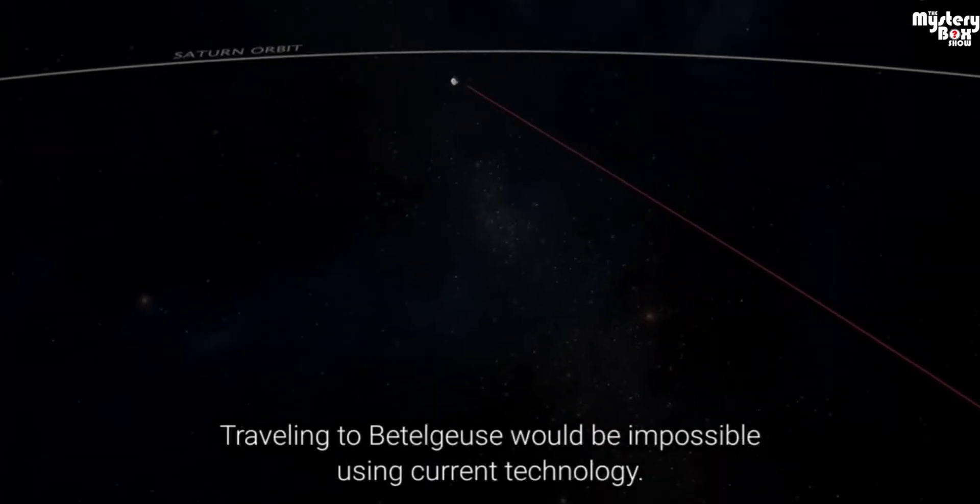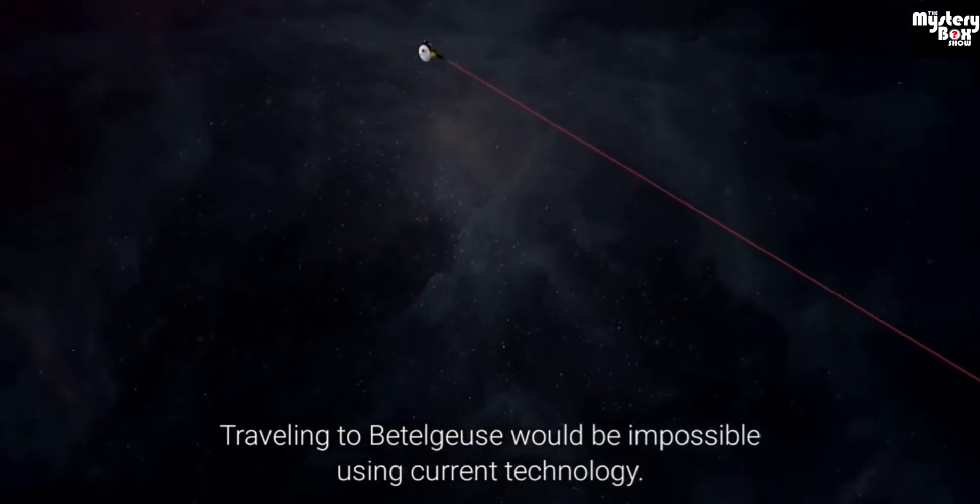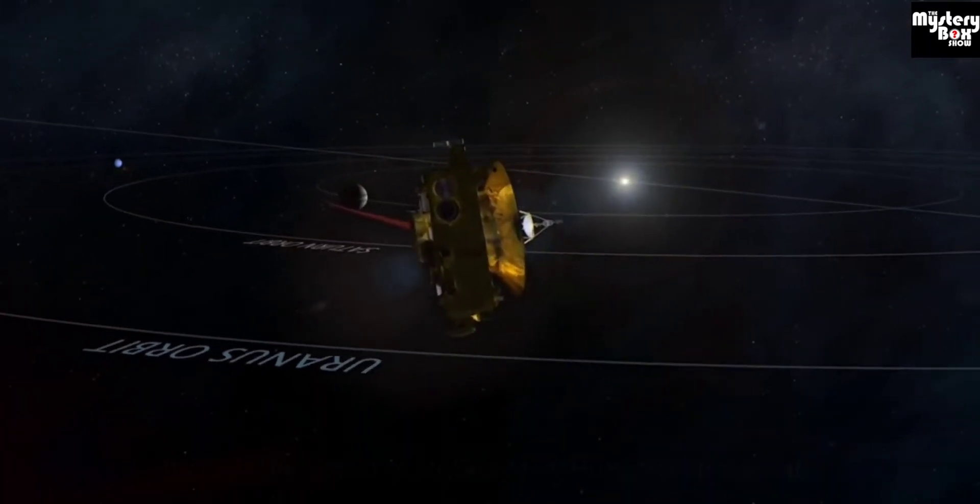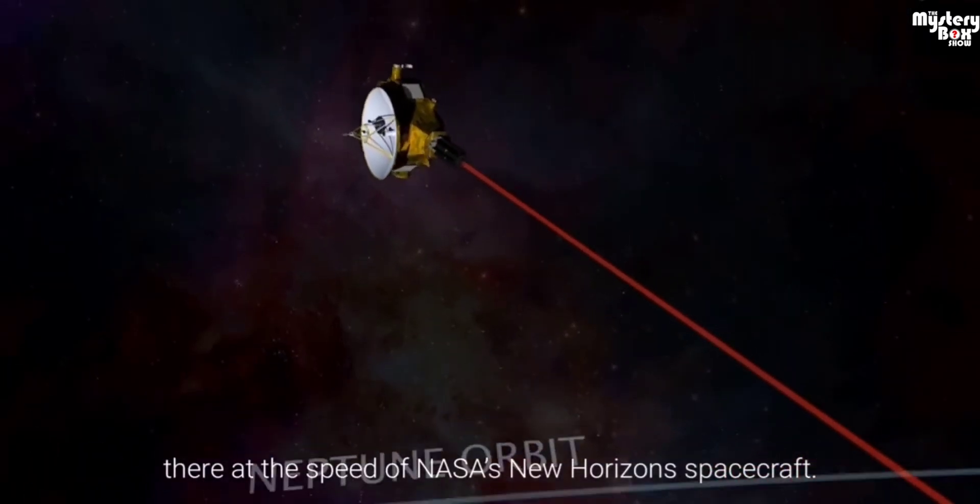Traveling to Betelgeuse would be impossible using current technology. It would take you more than 10 million years to get there at the speed of NASA's New Horizons spacecraft.